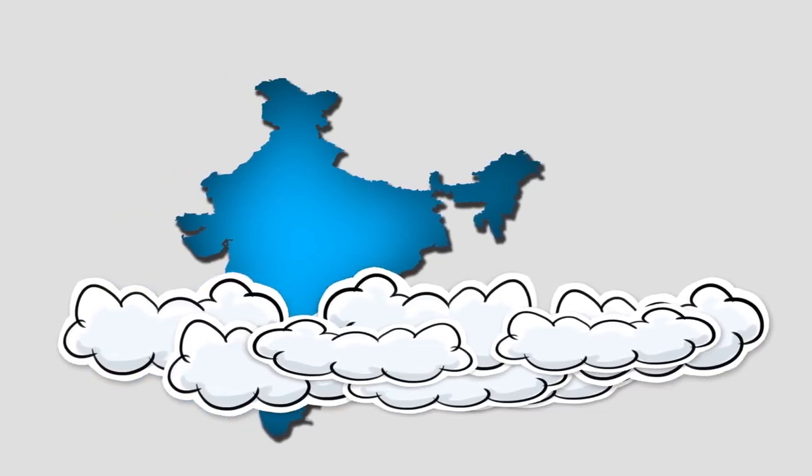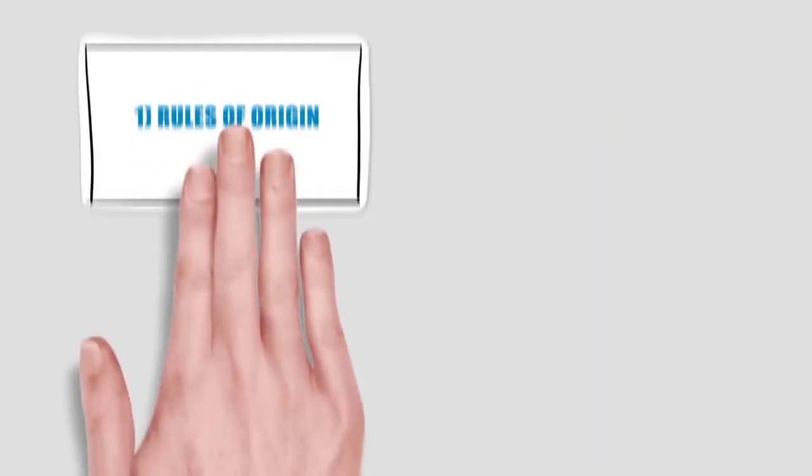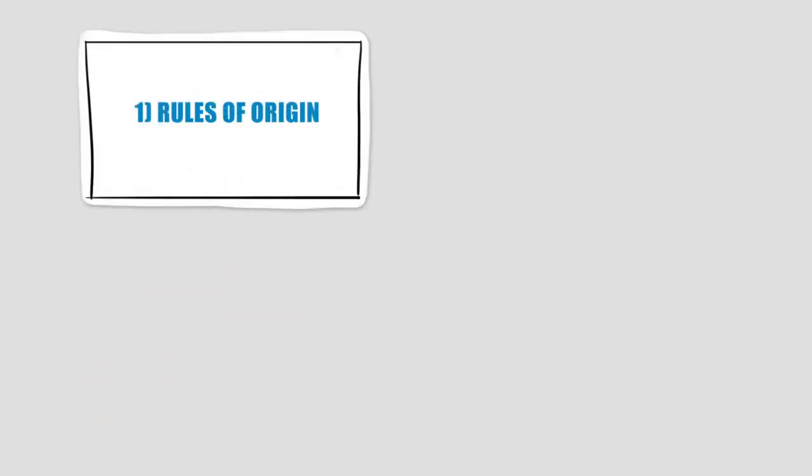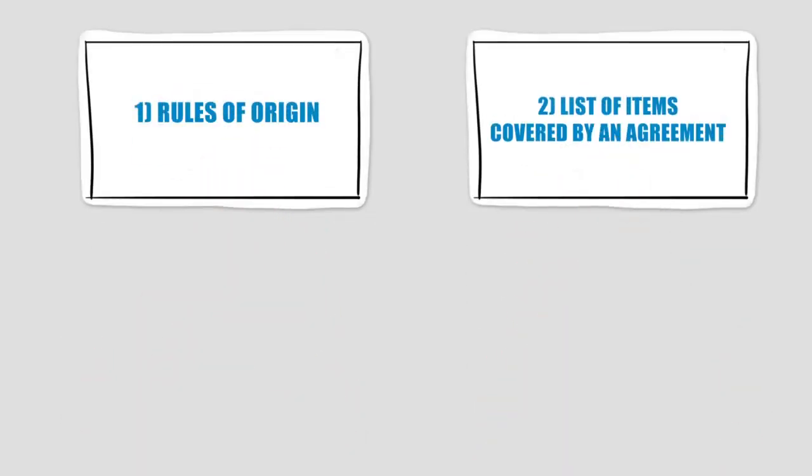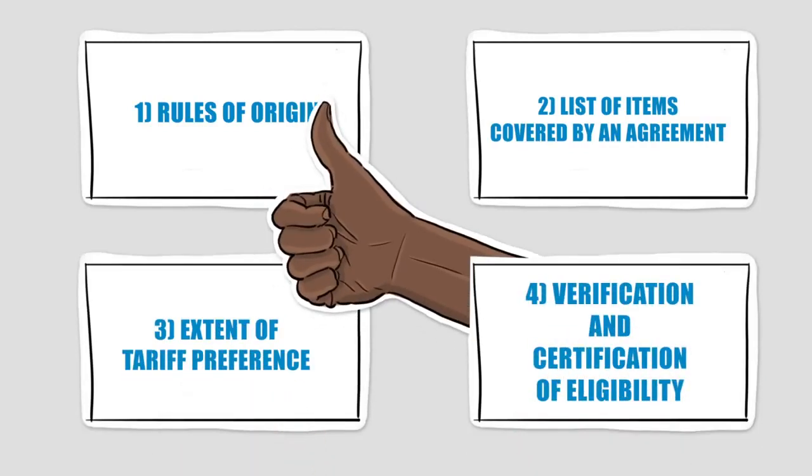These agencies also provide services relating to issue of COO, including details regarding rules of origin, list of items covered by an agreement, extent of tariff preference, and verification and certification of eligibility.